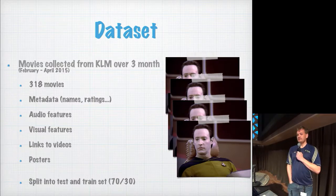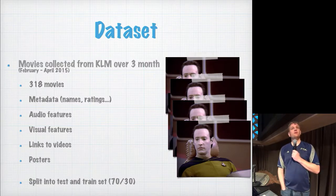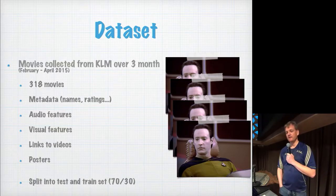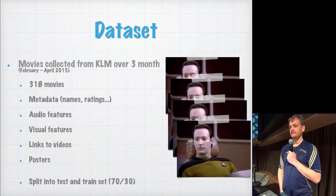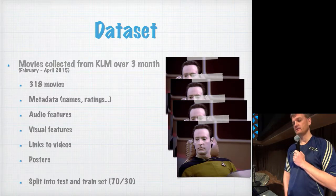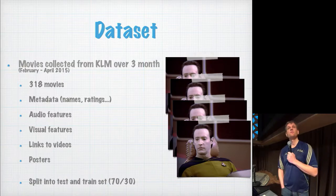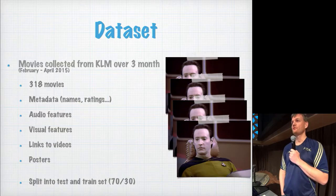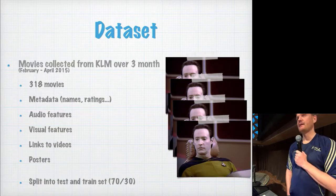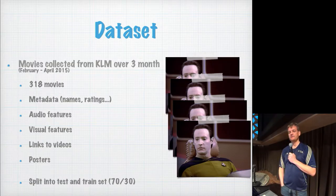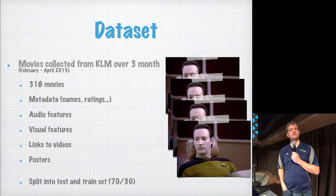In order to investigate this, we collected data over a three-month period from KLM. That gave us 318 movies. We got metadata from various sites — names, ratings, user comments, and so on. We extracted audio features and visual features. We provided links to the trailers, because we couldn't use the movies themselves, and posters. Then we split the data set into a 70-30 test and training set.